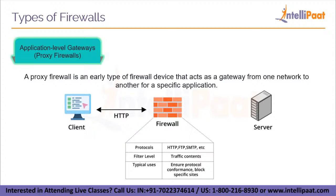The next type is application level gateways, commonly known as proxy firewalls. A proxy firewall is an early type of firewall device that acts as a gateway from one network to another for a specific application. By prohibiting direct connections from outside the network, proxy servers can provide additional functionality such as content caching and security, though this may have an impact on throughput and the applications that can be supported.